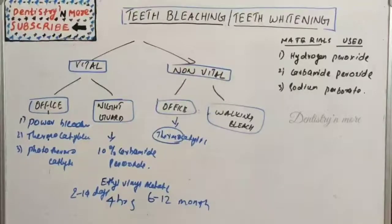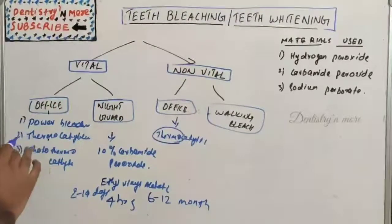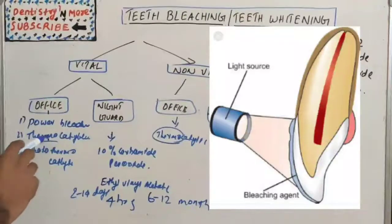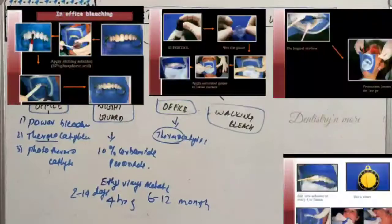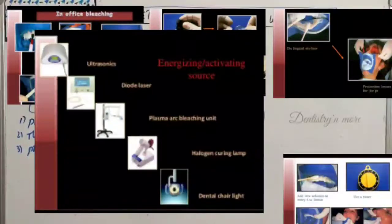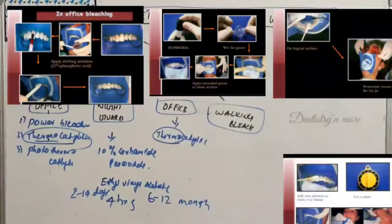Next is in-office bleaching — bleaching of vital teeth at the dental clinic. The basic technique is thermocatalytic bleaching. Equipment required includes power bleaching material, a tissue protector, an activating source (thermo-activator), protective cloth and eyewear, and a mechanical timer. The light source can be a conventional bleaching light, tungsten halogen curing light, xenon plasma light, argon or carbon dioxide lasers, or a diode laser.